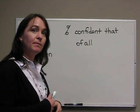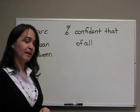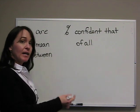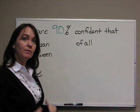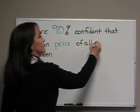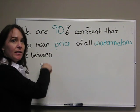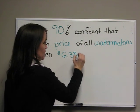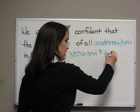We just found that the mean price of watermelons was between $6.3806 and $7.3794. So we want to interpret that. In our previous problem we were doing a 90% confidence interval. So we would say: we are 90% confident that the mean price of all watermelons is between $6.3806 and $7.3794.